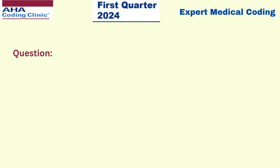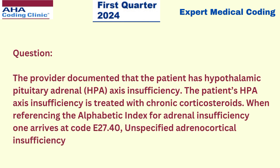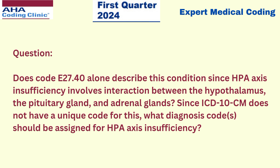Now let us see the scenario. The provider documented that the patient has hypothalamic-pituitary-adrenal axis insufficiency, treated with chronic corticosteroids. When referencing the alphabetical index for adrenal insufficiency, one arrives at code E27.40, unspecified adrenocortical insufficiency. Does code E27.40 alone describe this condition?